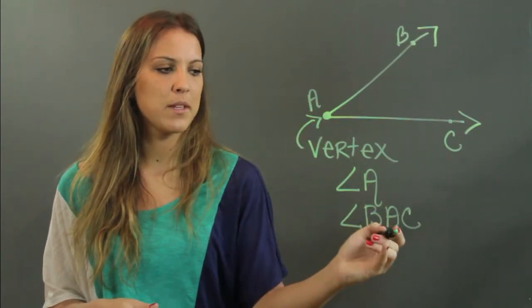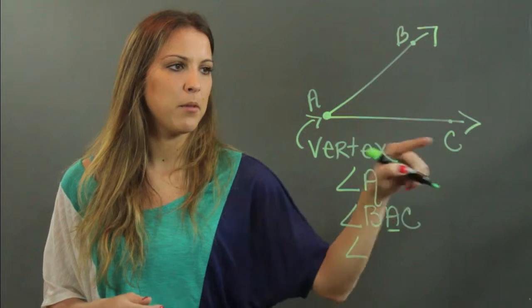So you just have to make sure that your vertex is always in the middle when you're naming your angle. And the third way we can label this is CAB.